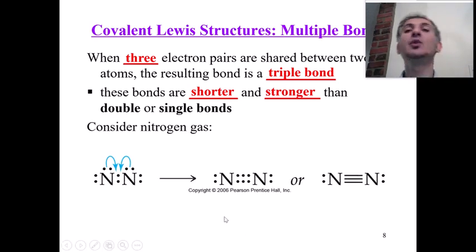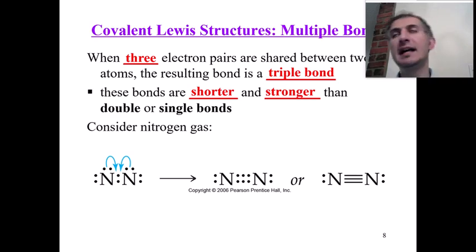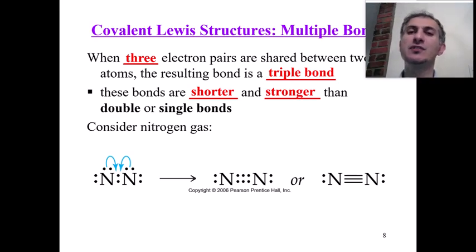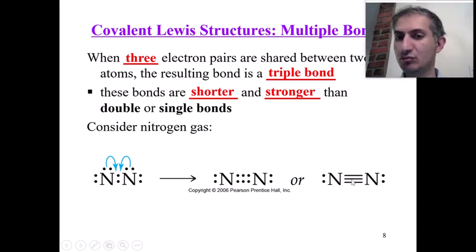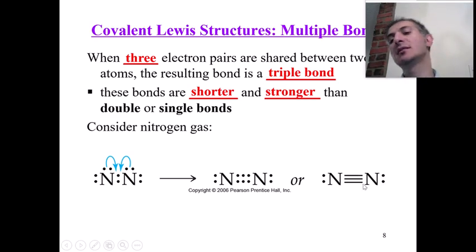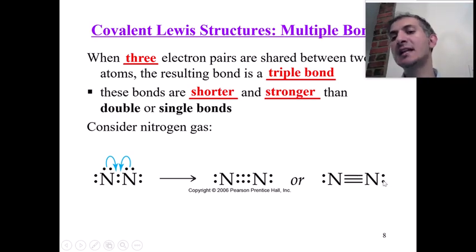For N2, nitrogen is group number five, so we draw five valence electrons for each nitrogen. When we connect the single electrons, we get three bonds — a triple bond. A triple bond means six bonding electrons total (two per bond). Each nitrogen also has one lone pair, which equals two non-bonding electrons.